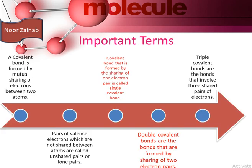Some important terminologies: a covalent bond is formed by mutual sharing of electrons between two atoms. A pair of electrons not shared between atoms are called unshared pairs or lone pairs. A bond formed by sharing one electron pair is a single covalent bond. A double covalent bond is formed by sharing two electron pairs. A triple covalent bond involves three shared pairs of electrons.